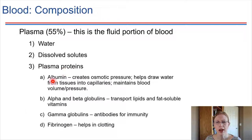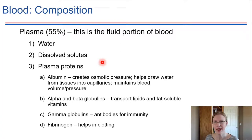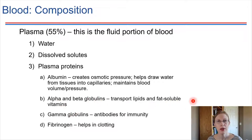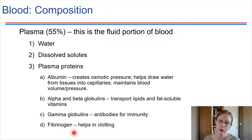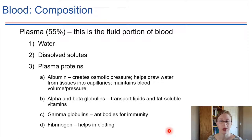A few really important plasma proteins: albumin is a protein that helps maintain osmotic pressure — it draws water into the blood from the tissues and helps maintain proper water balance. We also have globulins: alpha and beta globulins are important for transporting lipids and fat-soluble substances throughout the blood. Gamma globulins are antibodies that help our bodies fight off infections — we'll come back to those when we talk about immunity. And then fibrinogen, which is our focus for this chapter — fibrinogen is a protein that enables clotting when there's damage to a blood vessel.